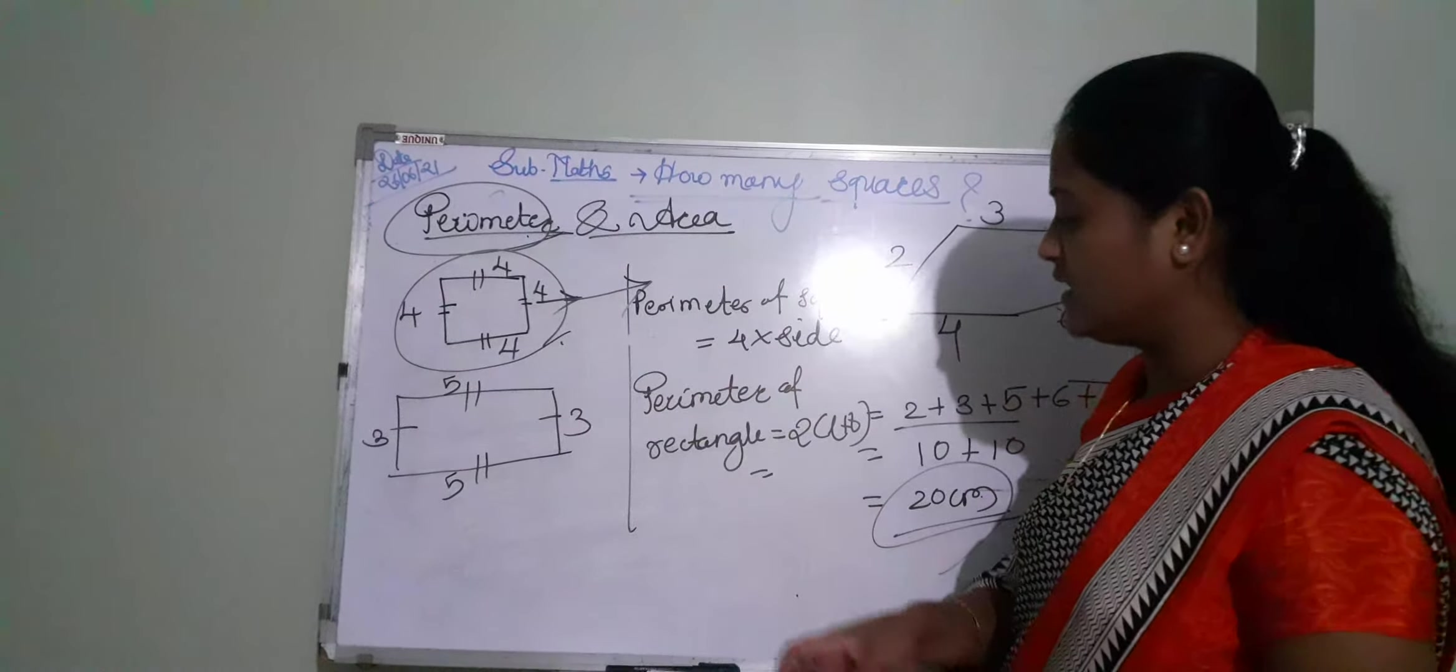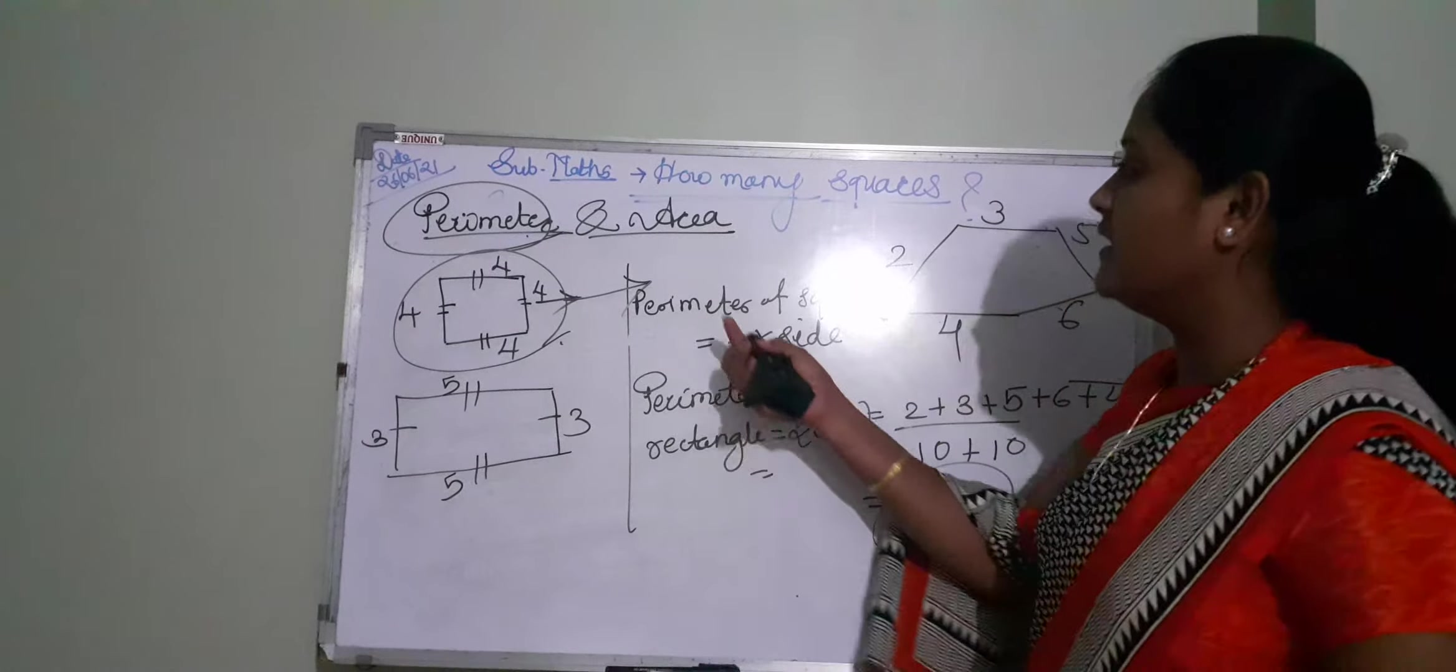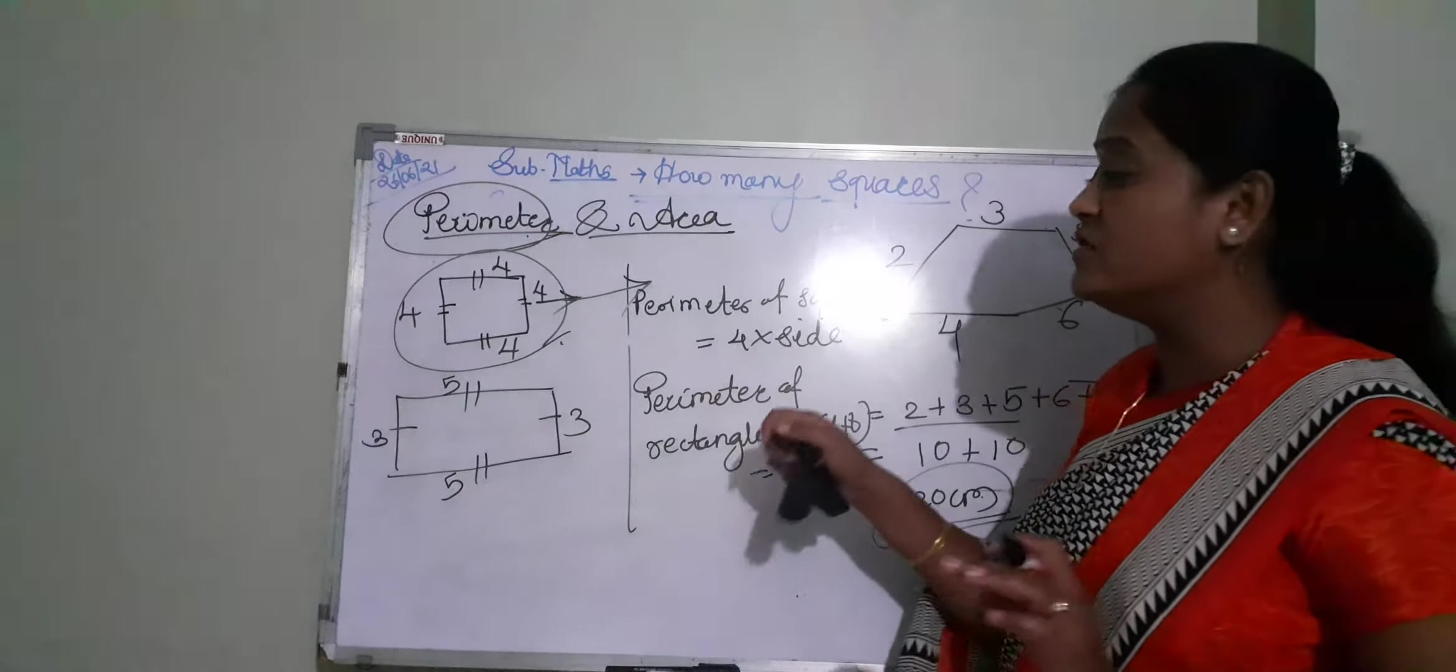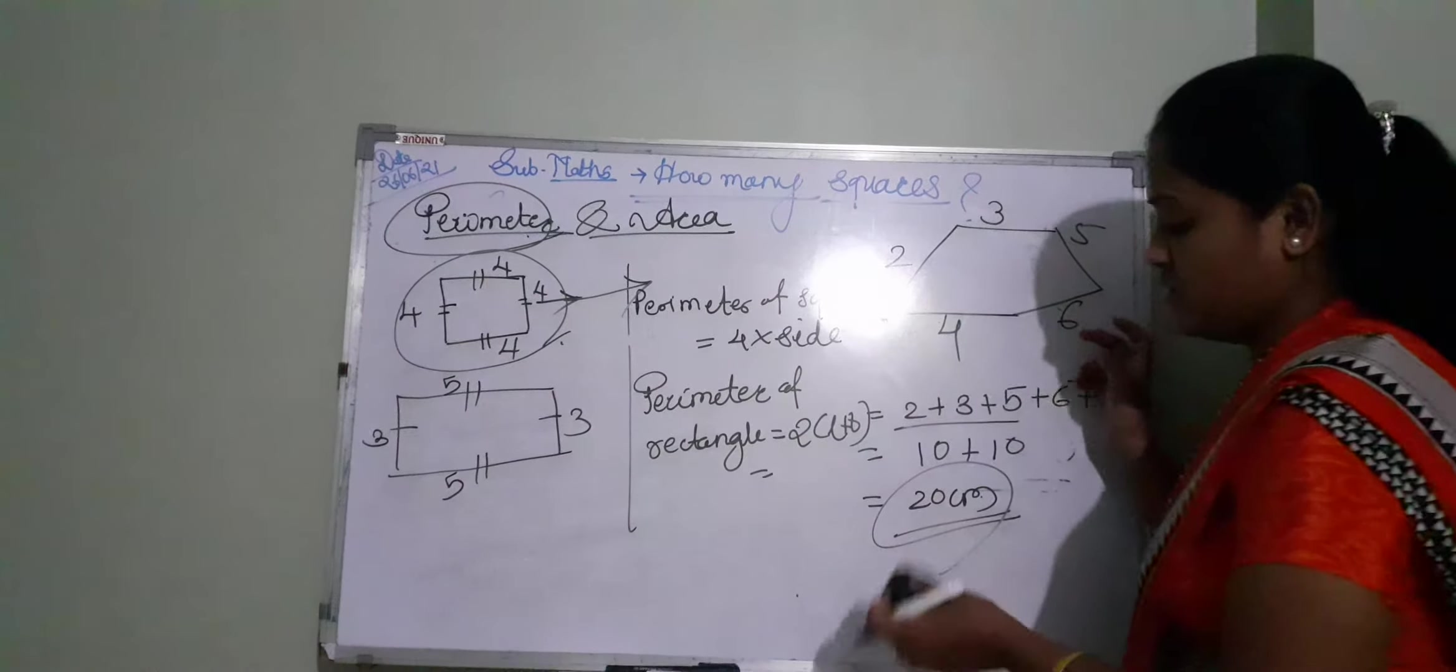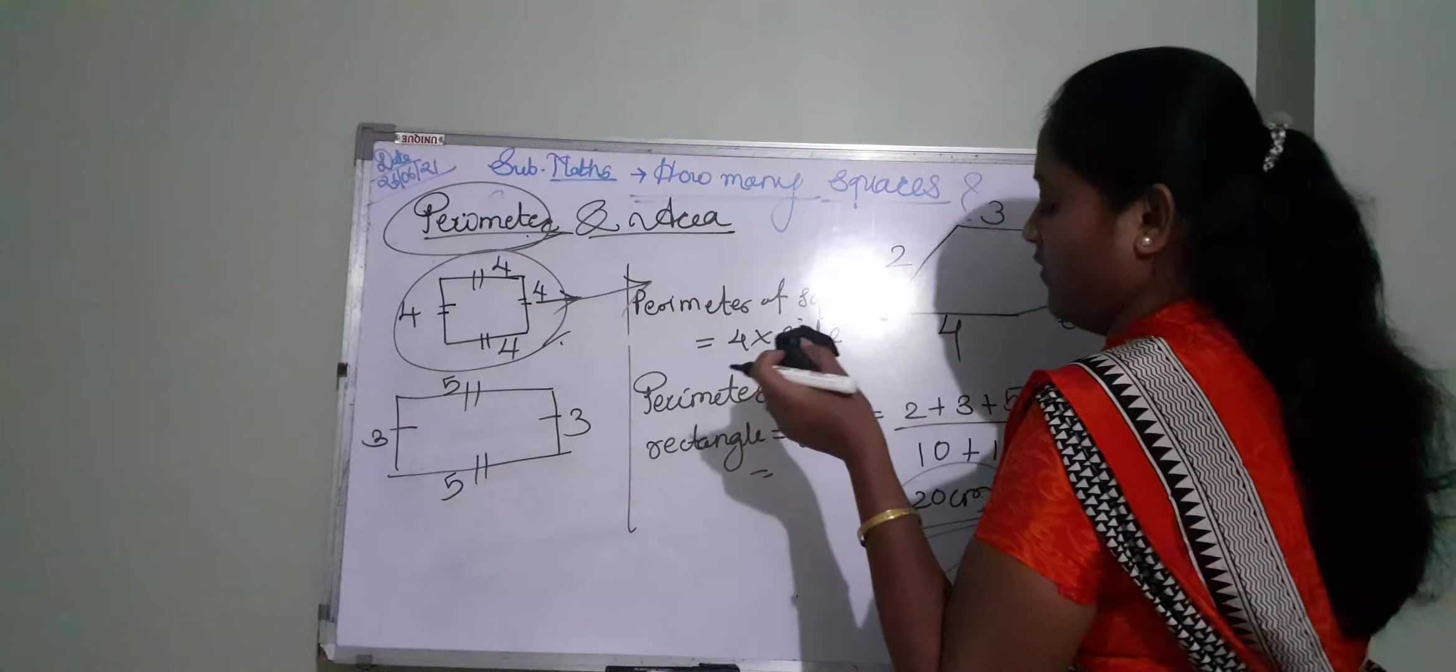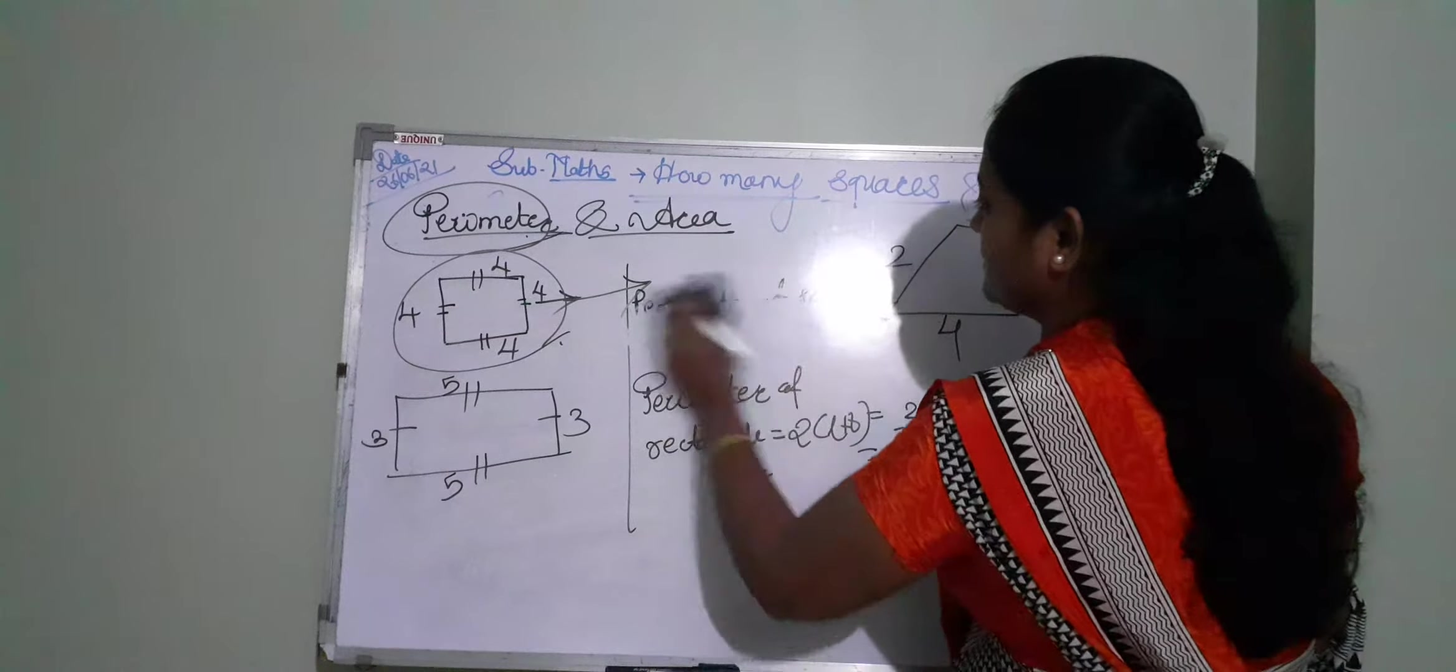But in that lesson, we can't find that perimeter by the formula. You just add the values that are given in that figure. Okay students?